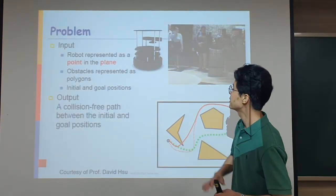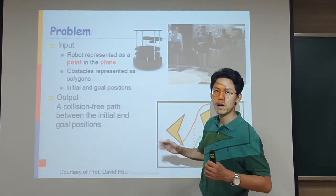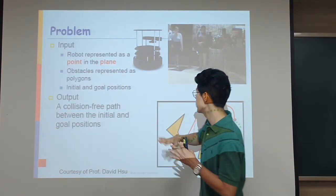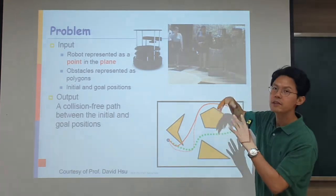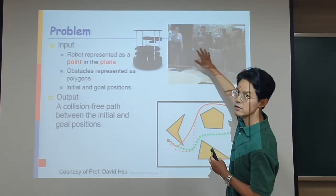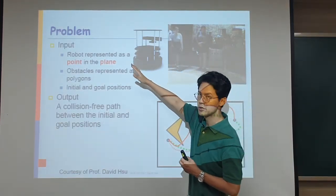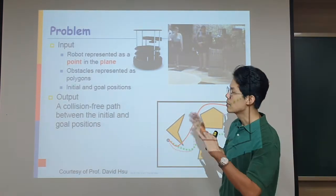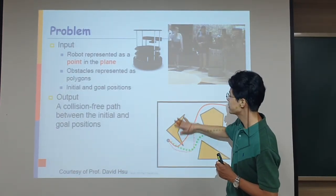This is our problem. Our input is the robot, but to simplify our discussion we assume the robot is just a 2D point in the 2D plane. In a lot of cases we can approximate the robot as a point. The obstacles in the surrounding environment can be represented as polygons, though there could be many other representations such as point clouds. We also assume a polygon shape for the obstacles.